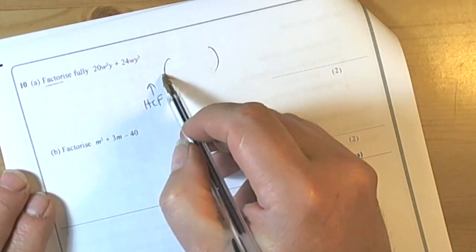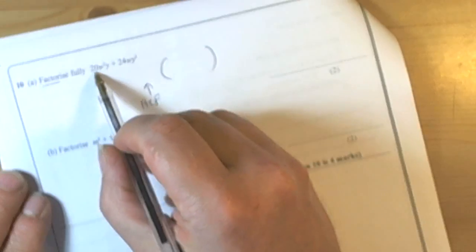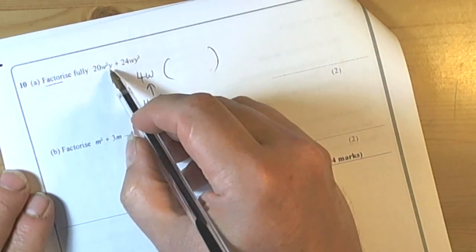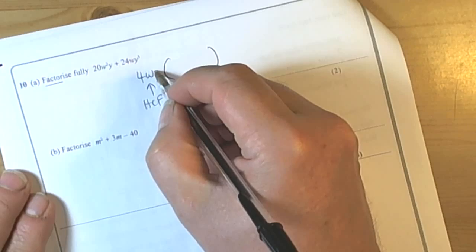So 20 and 24, highest common factor is 4. W squared and W, highest common factor would be W. Y and Y cubed, highest common factor would be Y.